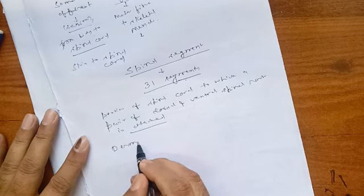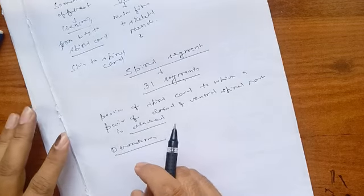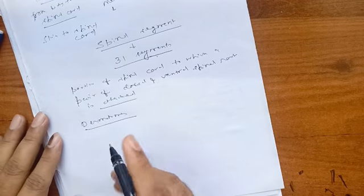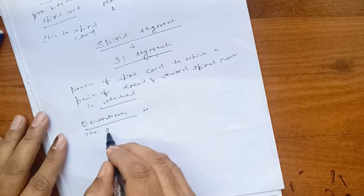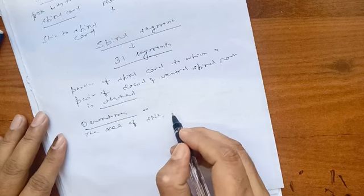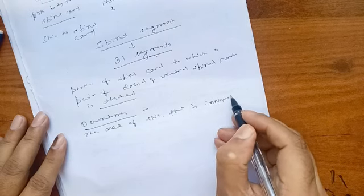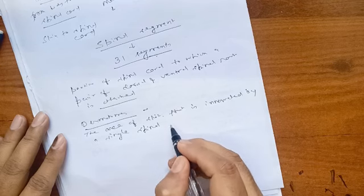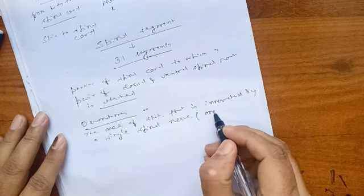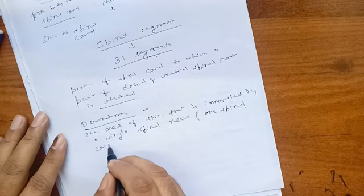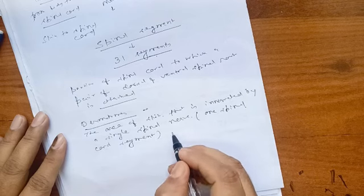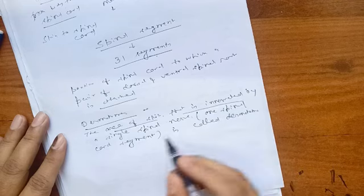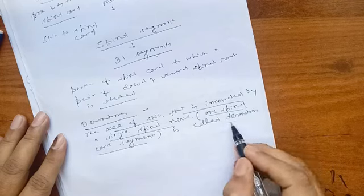Now the next term is dermatome. What is a dermatome? A dermatome is the area of the skin that is innervated by a single spinal nerve — that is, by one spinal cord segment. The area of the skin innervated by a single spinal nerve or one spinal cord segment is called the dermatome.